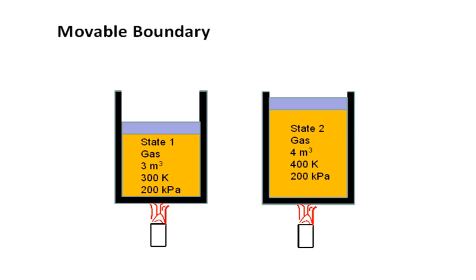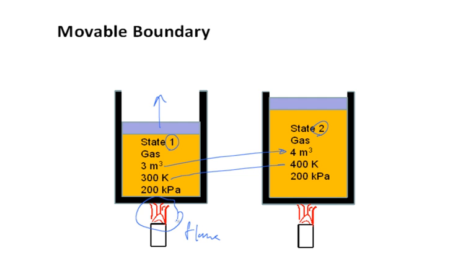If the piston moves up from state 1 to state 2, the volume increases but mass does not change — it's a closed system. The boundary is movable. The temperature could change if you apply heat, say from a flame. In this example, pressure stays the same — maybe the piston is frictionless and its weight doesn't change, so pressure stays constant.